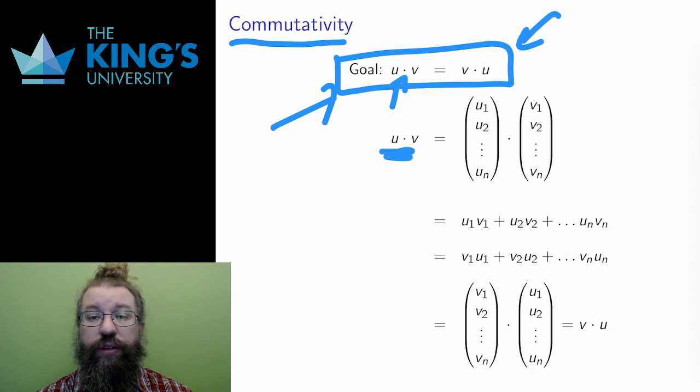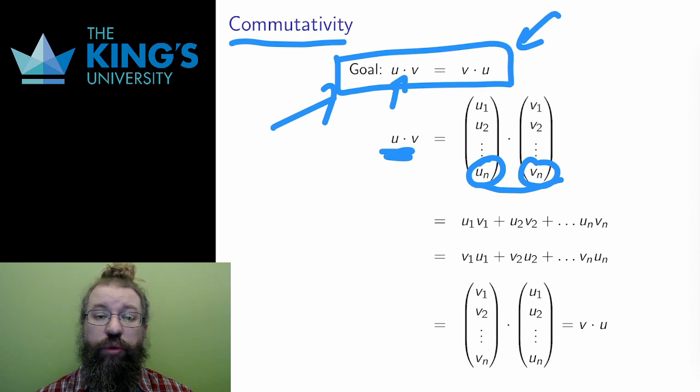I'll start at the left with u dot v. As I've done frequently now, I'll expand the vector and components. I want dot products to work in any r_n, so I'll write the vector with n components, and I'll do the proof such that this will work whether n is 2, 3, 4, or any higher number.